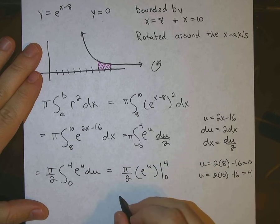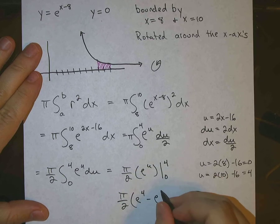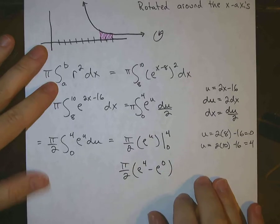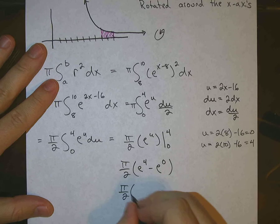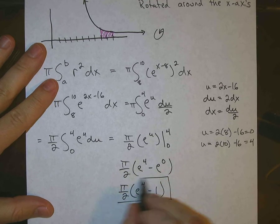Plug in our upper limit. We get pi over 2, e to the 4, minus plug in our lower limit, e to the 0. e to the 0 is 1. So we get pi over 2 times e to the 4, minus 1. And that's your answer. See you later.